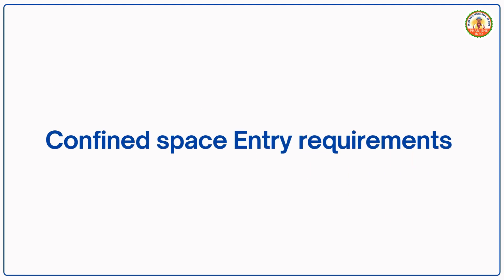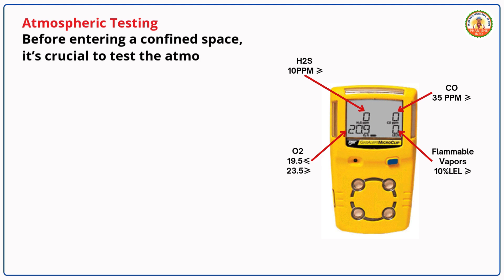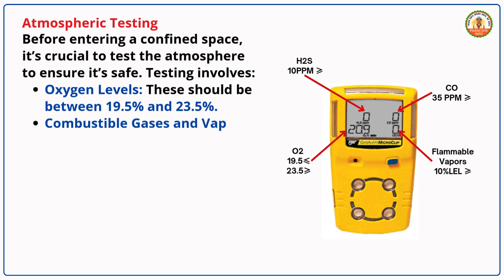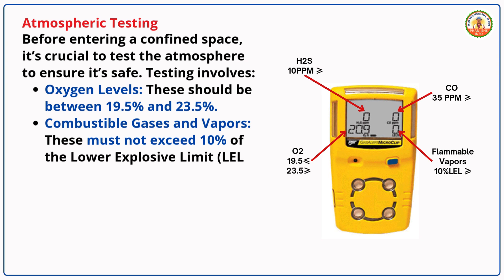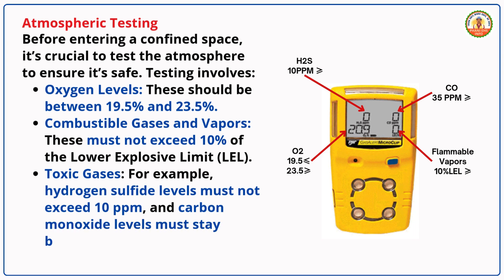Confined space entry requirements — Atmospheric Testing. Before entering a confined space, it's crucial to test the atmosphere to ensure it's safe. Oxygen levels should be between 19.5% and 23.5%. Combustible gases and vapors must not exceed 10% of the Lower Explosive Limit (LEL). Toxic gases such as hydrogen sulfide must not exceed 10 ppm, and carbon monoxide levels must stay below 35 ppm over an 8-hour period.